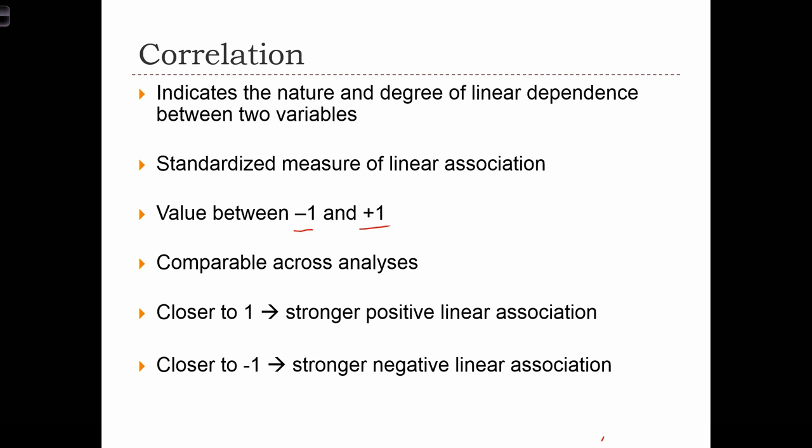A value close to positive 1 indicates a stronger positive linear relationship, and a value close to negative 1 indicates a stronger negative linear association. Correlation is comparable across analyses because the statistic is bound in the range of minus 1 to 1.